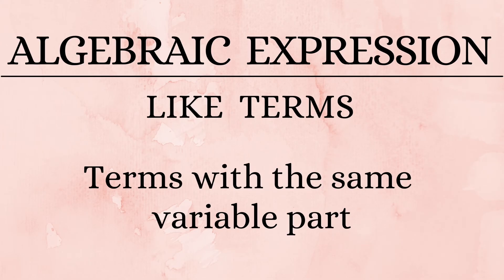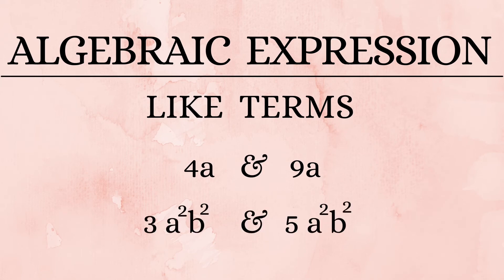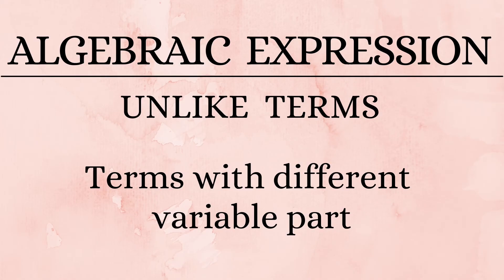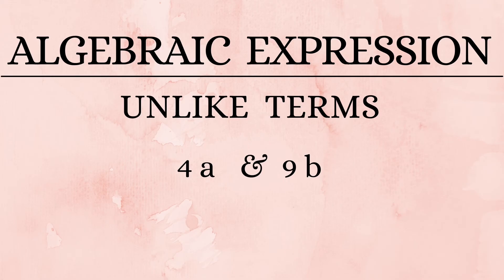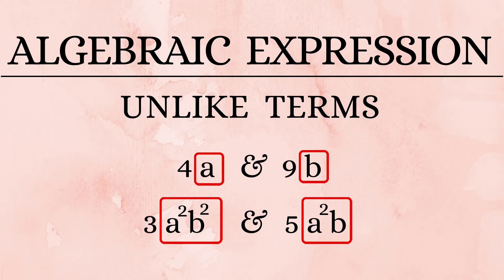Next, let's learn what like terms are. If two different terms have the same variable part, they are known as like terms. For example, '4a' and '9a' are like terms, and '3a squared b squared' and '5a squared b squared' are also like terms — their variable part is 'a squared b squared.' Terms that have different variable parts are called unlike terms. For example, '4a' and '9b' are unlike terms, and '3a squared b squared' and '5a squared b' are unlike terms because their variable parts differ.